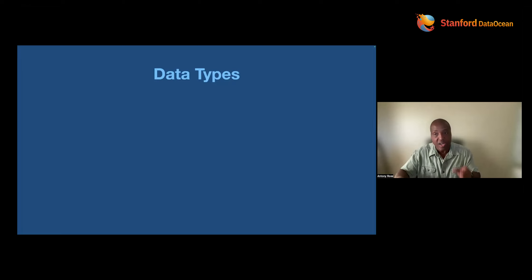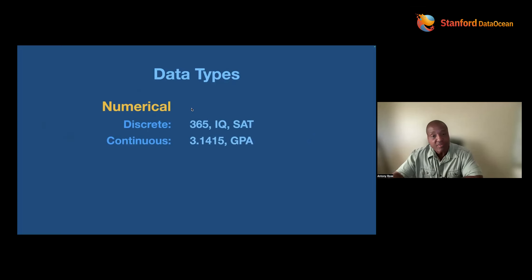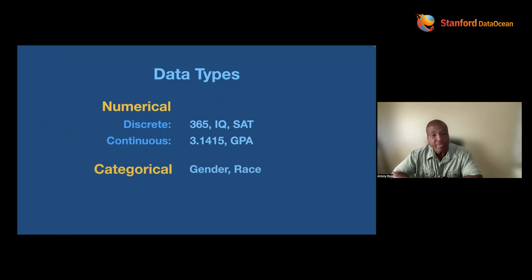A column, feature, variable — whatever you want to call it — we want to tell the machine about it. If you have numbers, machines understand numbers. If you have 365 days a year, IQ, SAT score — those are discrete integers. Machines totally get it. If you have continuous values like pi or GPA, the machine says, I got it — decimals, I understand all of that. No action needed.